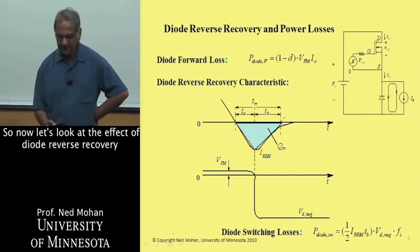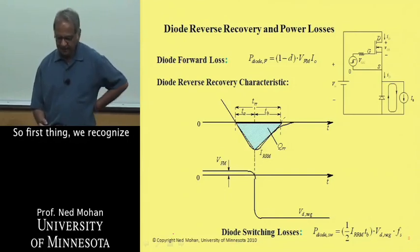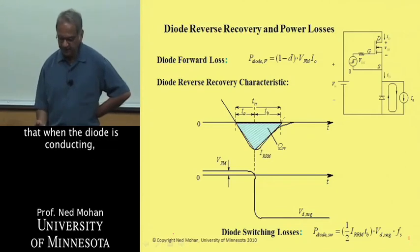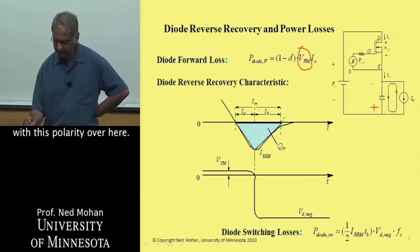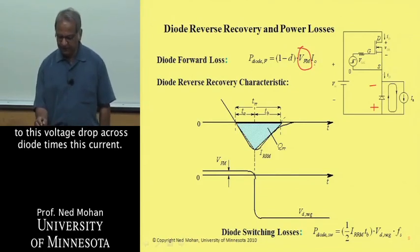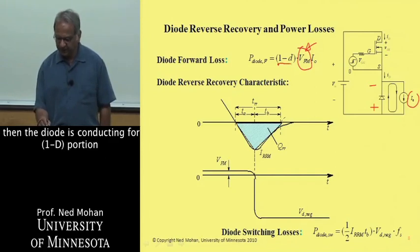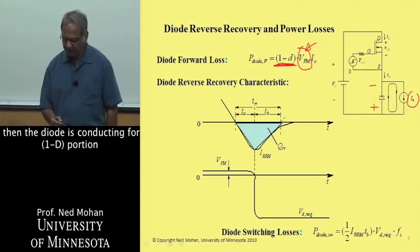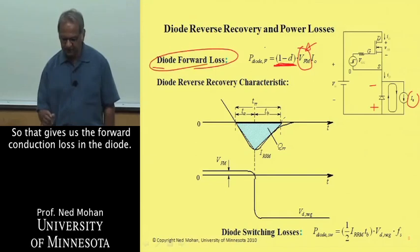Now let's look at the effect of diode reverse recovery and its effect on power losses. When the diode is conducting, there's a finite voltage drop across it, VFM, with this polarity. Therefore, the diode forward loss is equal to this voltage drop across the diode times the current. If D is the duty ratio of this transistor, then the diode is conducting for the 1 minus D portion of every switching time period, which gives us the forward conduction loss in the diode.